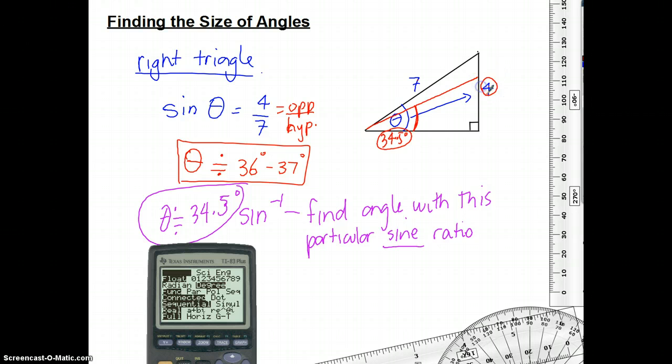What's going to happen with the 4? It's going to get smaller, isn't it? And the 7 is also going to change. So as soon as you change the size of the angle, you're changing the ratio.